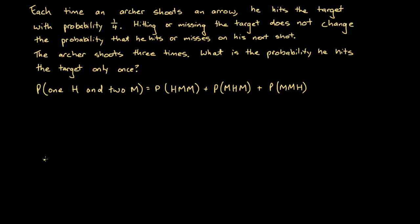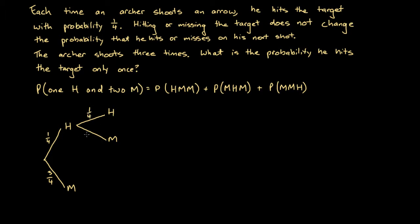Imagine we've got a starting point with two branches. The first two branches denote the possibilities that he hits the first time or he misses. We know that he hits with probability 1/4 and misses with probability 3/4, because one minus a quarter is three quarters. That's the first shot. Once he's taken that first shot, he has another two possibilities: he could hit his second shot or he could miss. So again, he hits with 1/4 probability and misses with 3/4, and that happens whether or not he hits or misses the first shot.